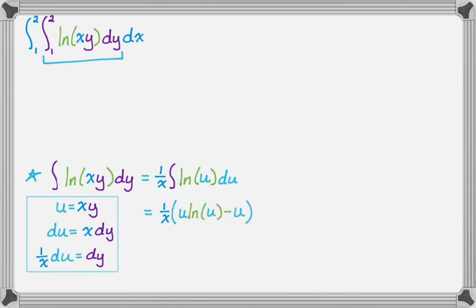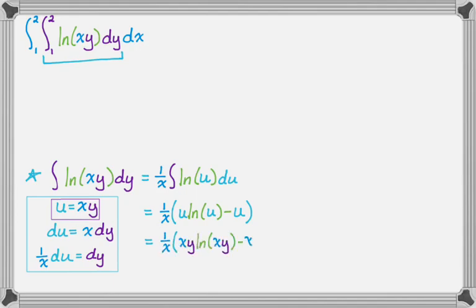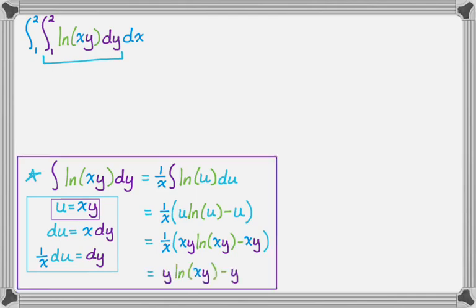Using the memorized result, (1/x) times the quantity u·ln(u) minus u. We need plus c, but since we're doing a definite integral we won't worry about that. Now replace all u's with x·y: (1/x)·(x·y·ln(x·y) minus x·y). Distributing the 1/x gives us y·ln(x·y) minus y — that's our antiderivative.